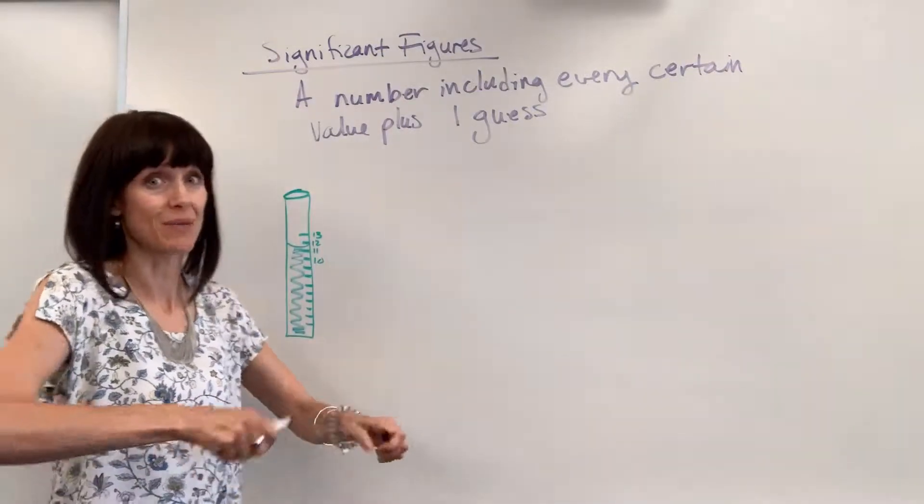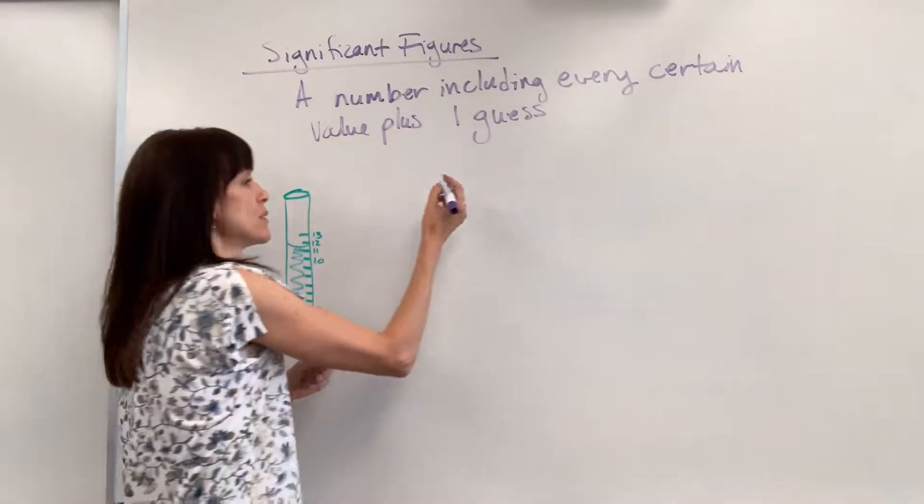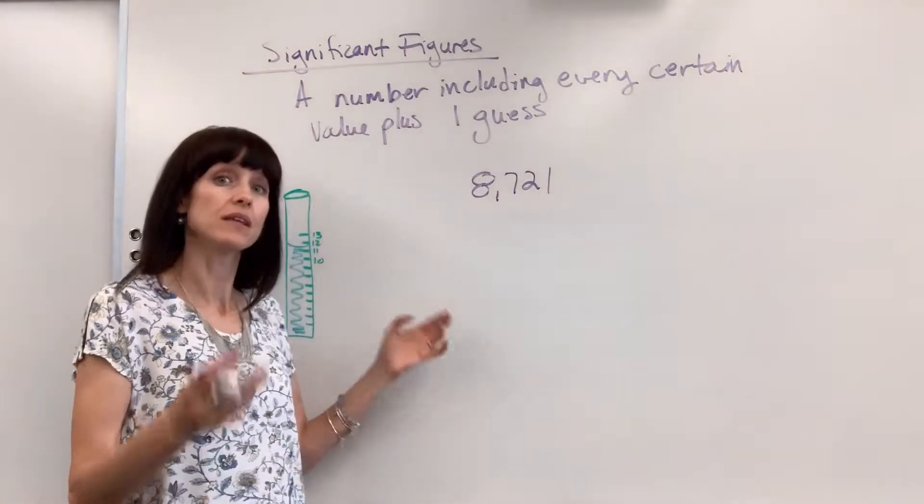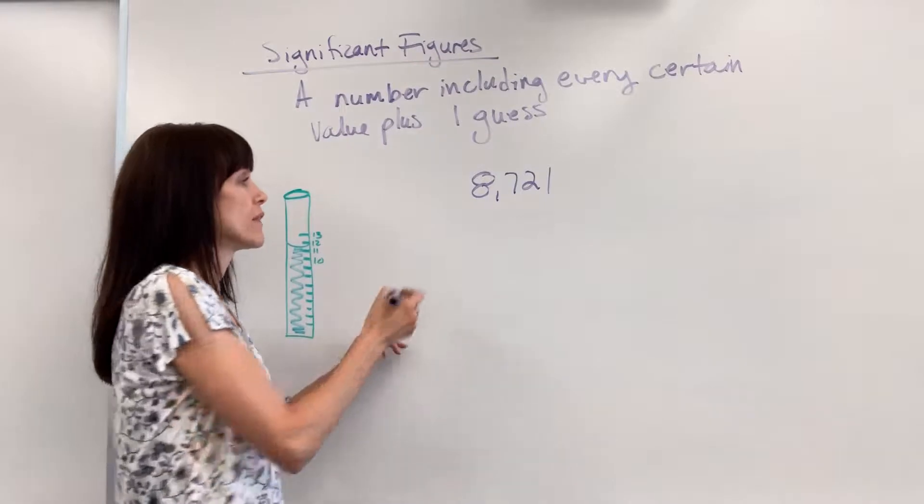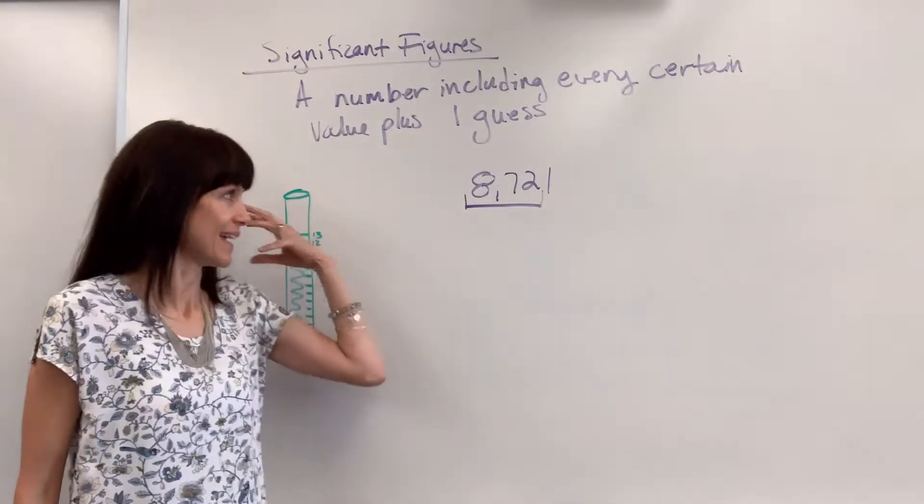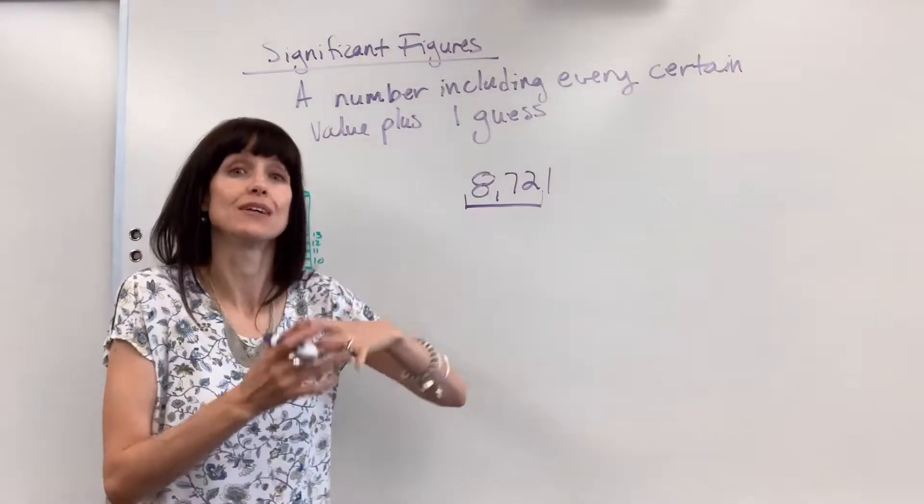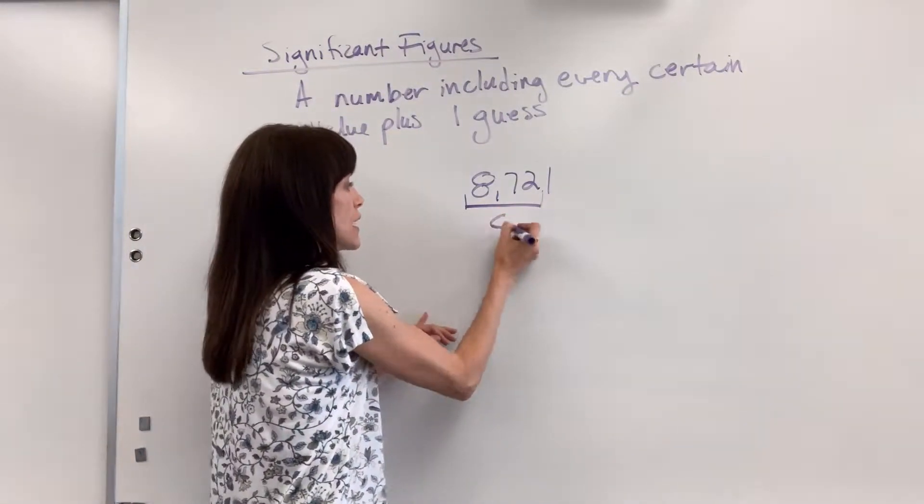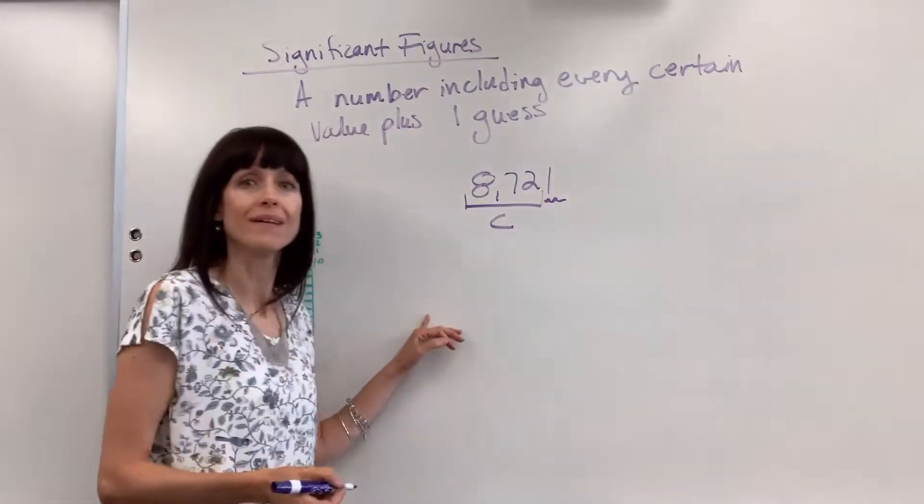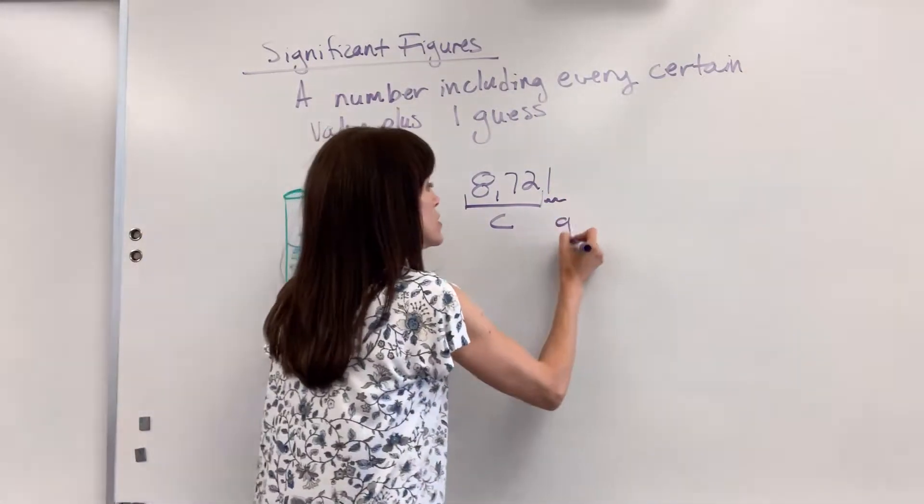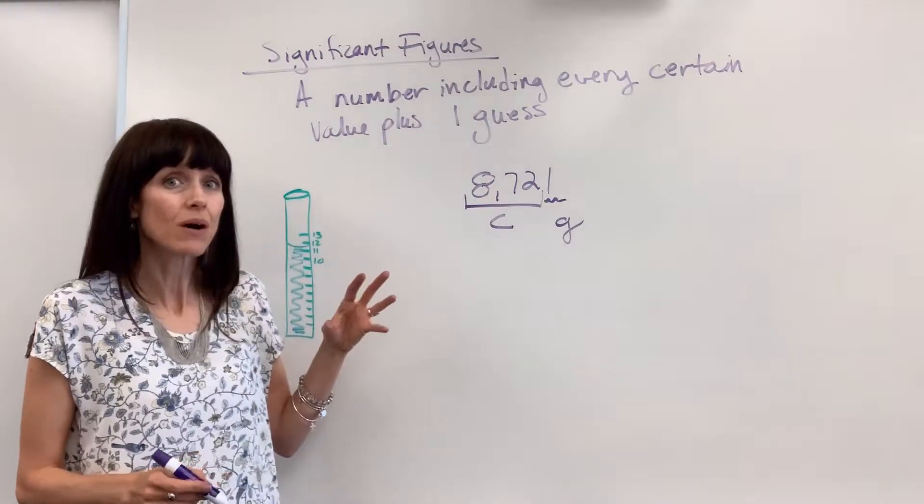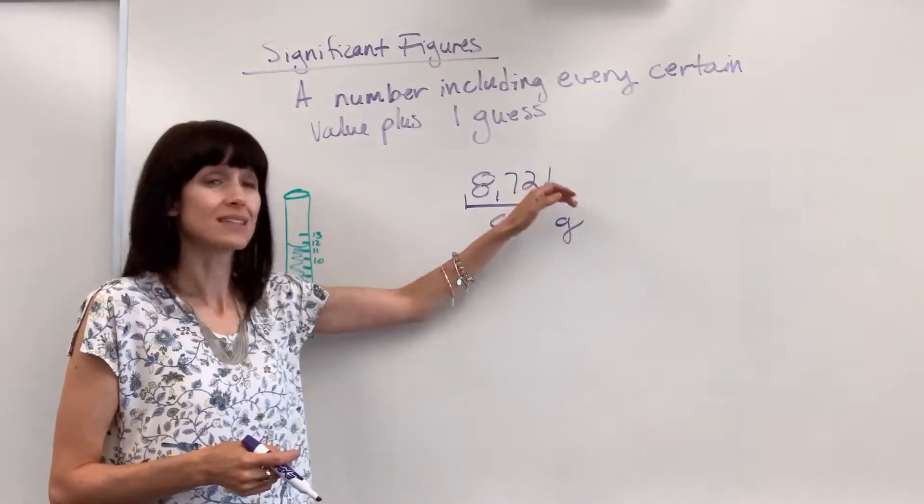Let me give you a couple of examples. Let's say we have 8,721 paperclips and this is a significant figure. That means for sure we know we've got 8,720 paperclips. That's what's certain. I'm going to put C for certain. This last number, that one, is the guess. I'm going to put G for guess. That means it could maybe be three, maybe a zero. We're not positive, but that's the guess.